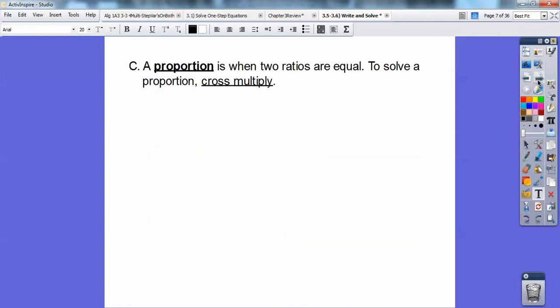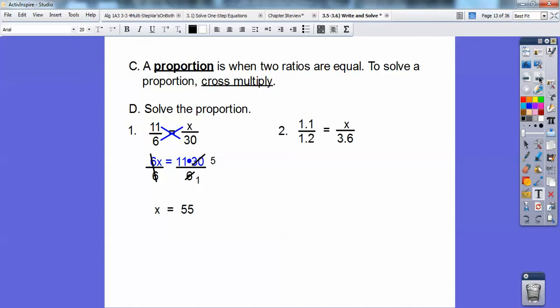A proportion is when two ratios are equal to each other. And when you solve proportions, you just cross multiply. So let's go ahead and solve each proportion. Go ahead and cross multiply. 6x equals 11 times 30. You can multiply 11 times 30 and get 330, but you're going to have to divide by 6 anyways. And I recognize that 6 goes into this 30 right there. So I'm going to keep the numbers small and not multiply 11 times 30 because 6 will go into 30 five times. 11 times 5 is 55.